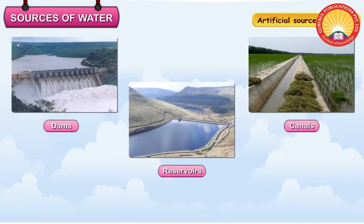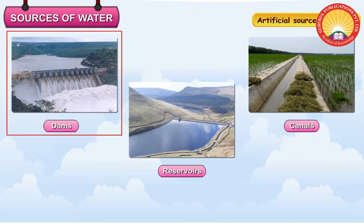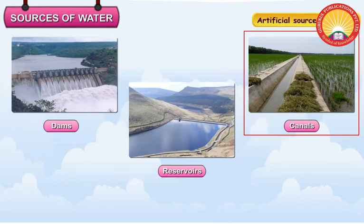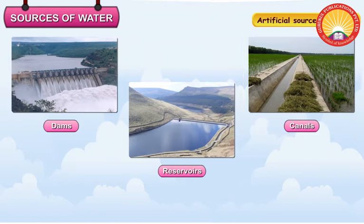Artificial sources of water: Dams, reservoirs, and canals are artificial sources of water. Water is stored in these sources and is used at the time of water shortage.